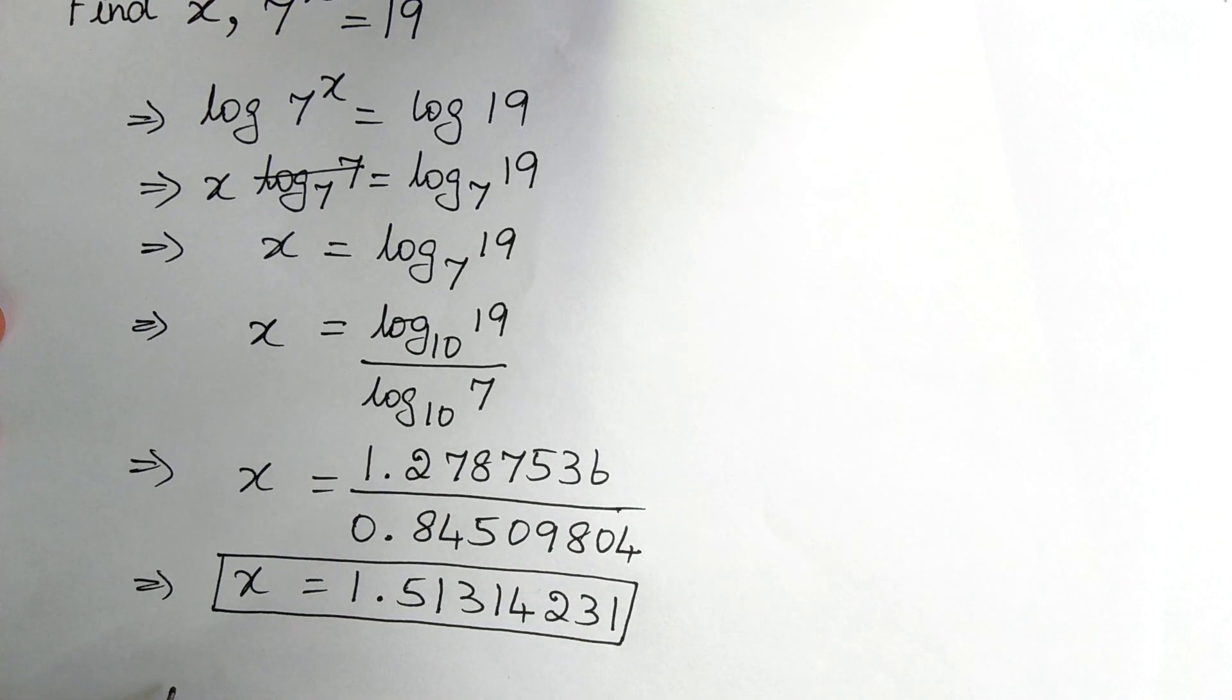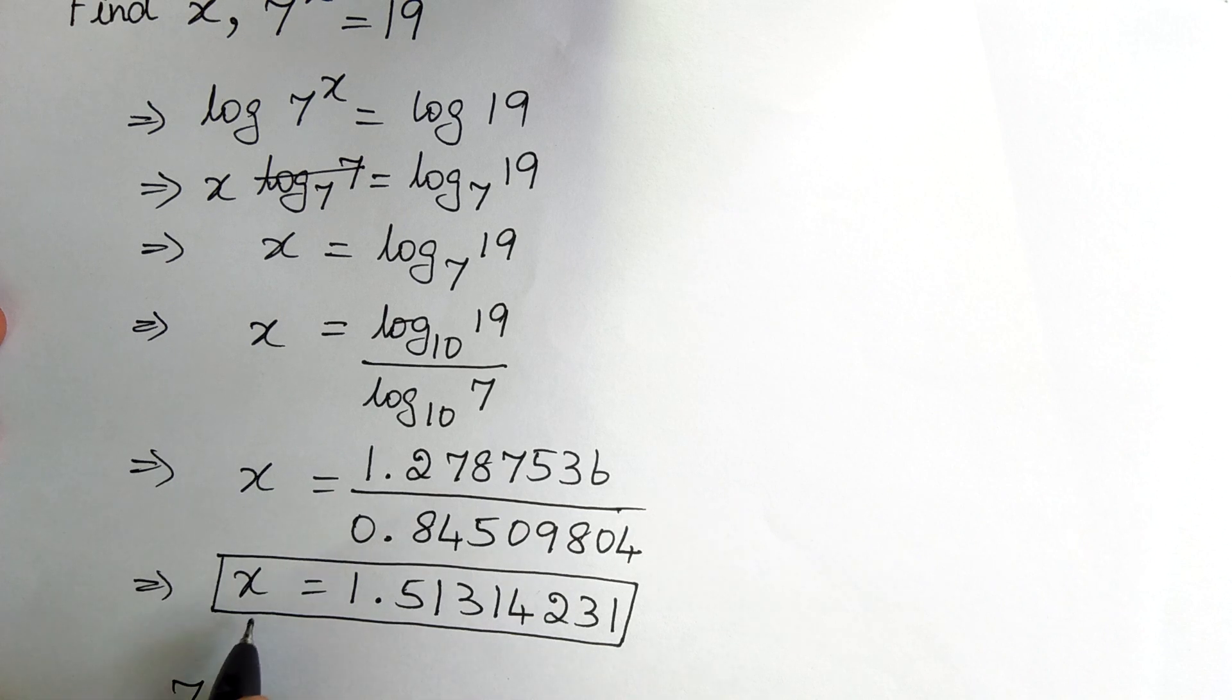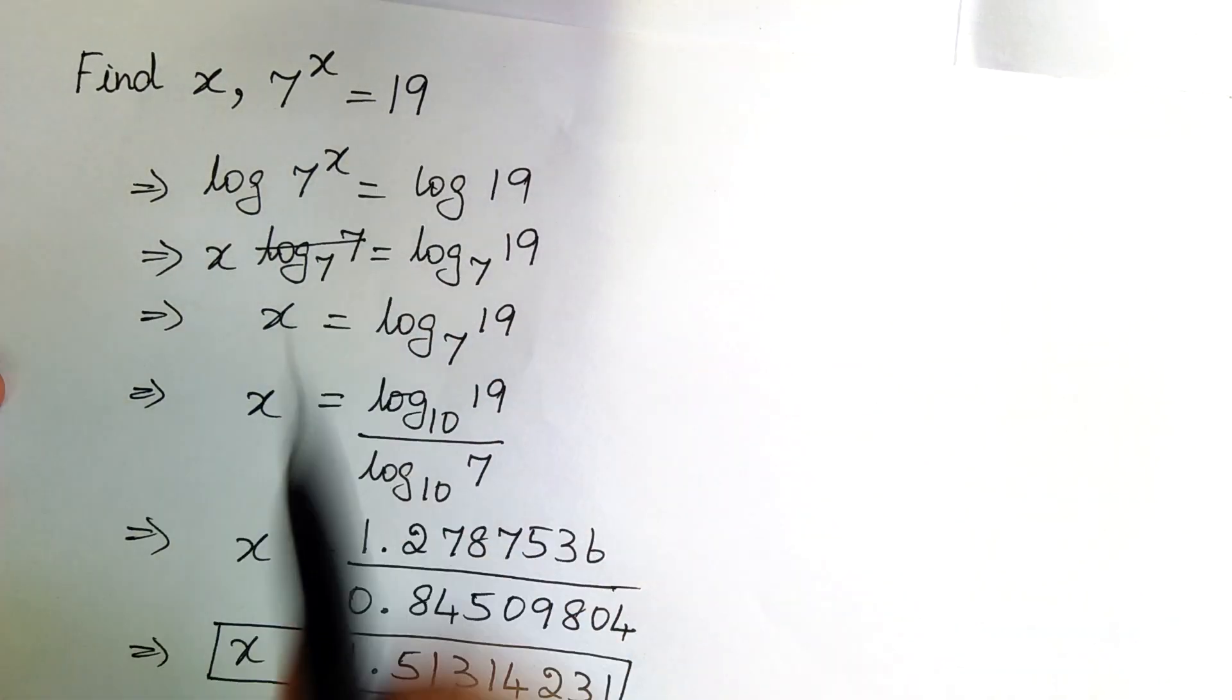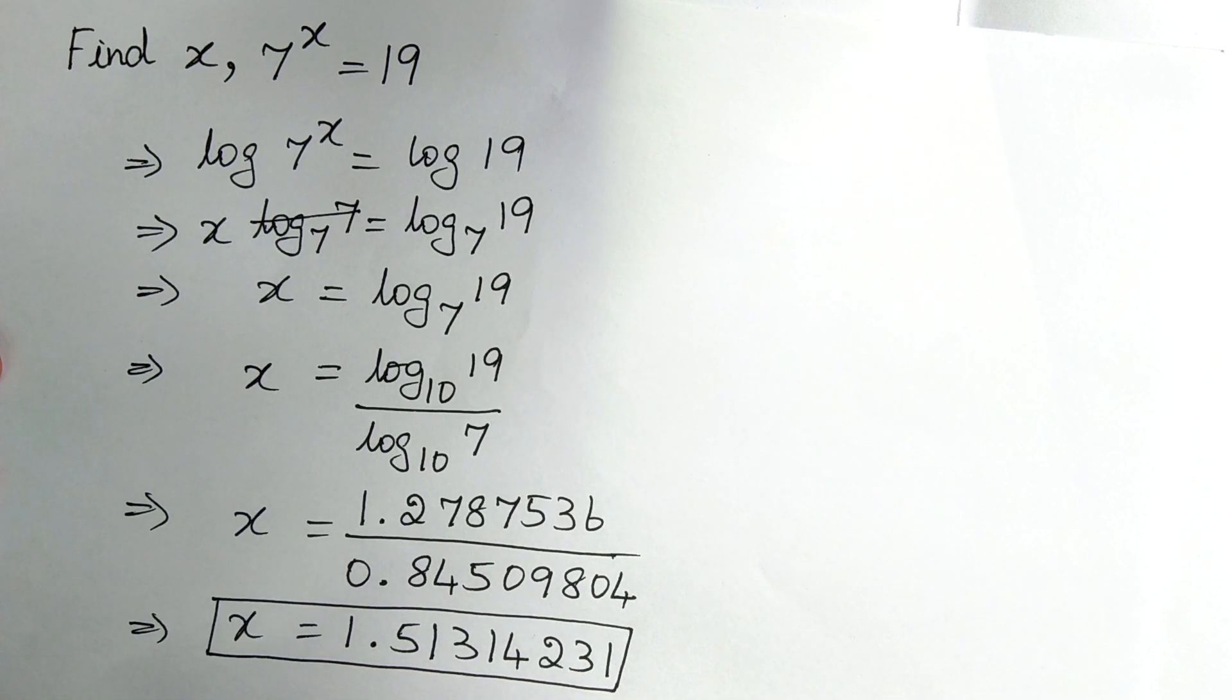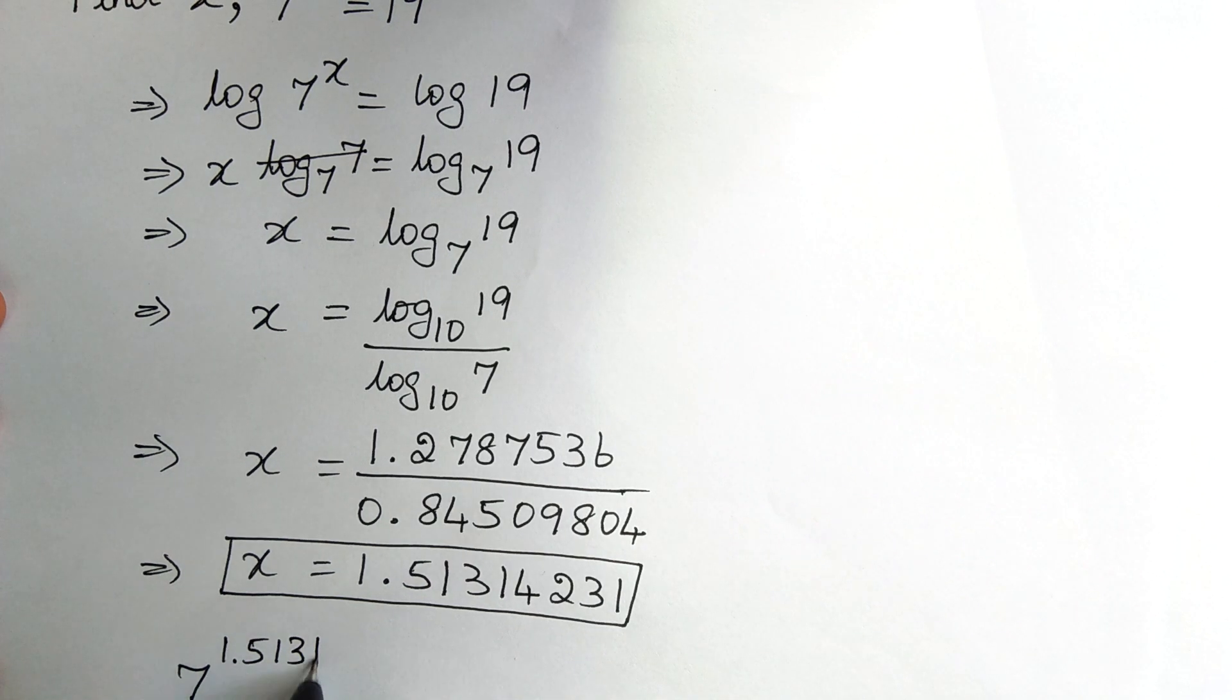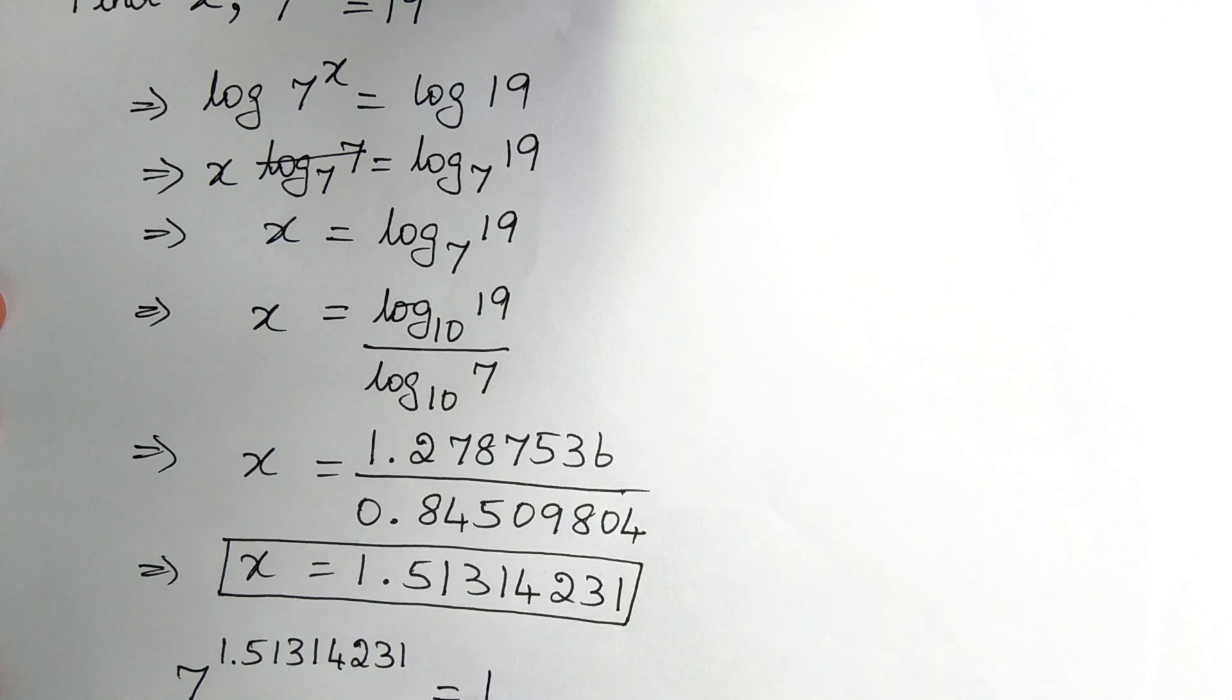To check this, if we substitute the value of x in the equation, we will get 19. That is, 7 power 1.51314231 is equal to 19.